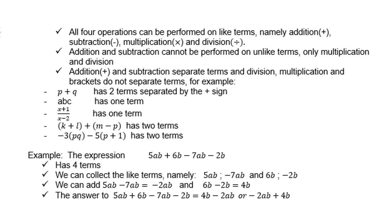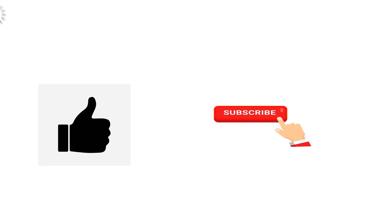So the answer therefore, for 5ab plus 6b minus 7ab minus 2b is 4b minus 2ab, or you can switch. You can say negative 2ab plus 4b.